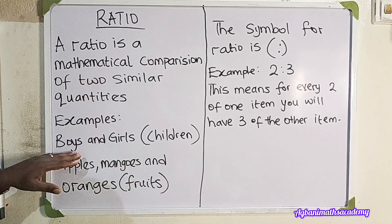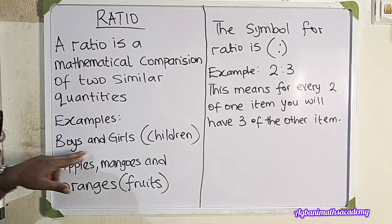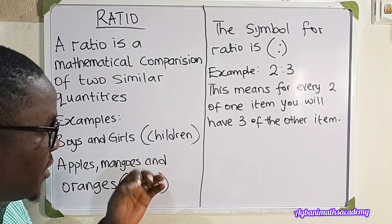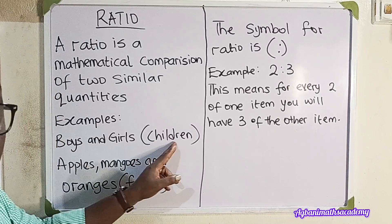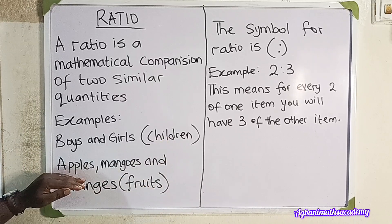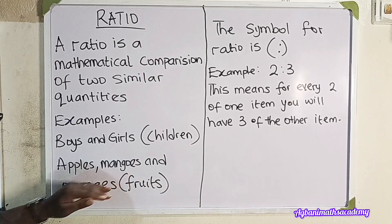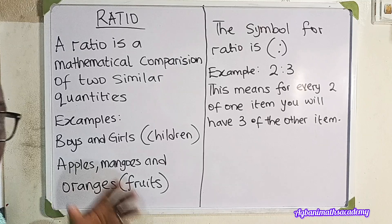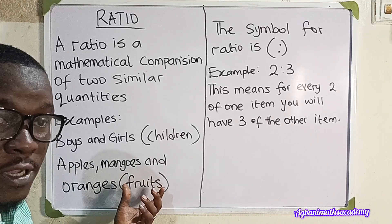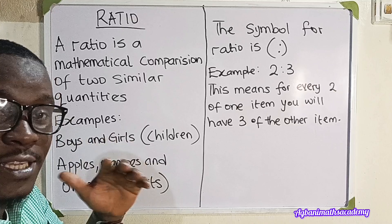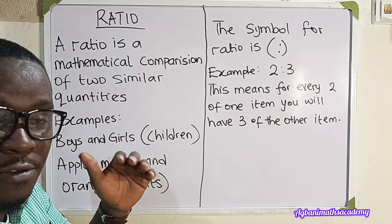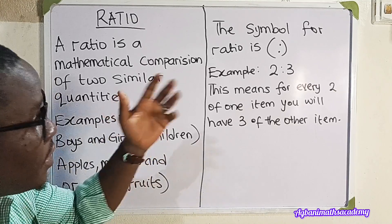For example, if you have a situation where you're comparing the number of boys to the number of girls, you're dealing with ratio. The reason is they are similar — they are children. Next, if you're comparing the number of apples to mangoes and oranges, you're also dealing with ratio because they are all fruits. Leave other examples of similar quantities you can compare in ratio in the comment section.